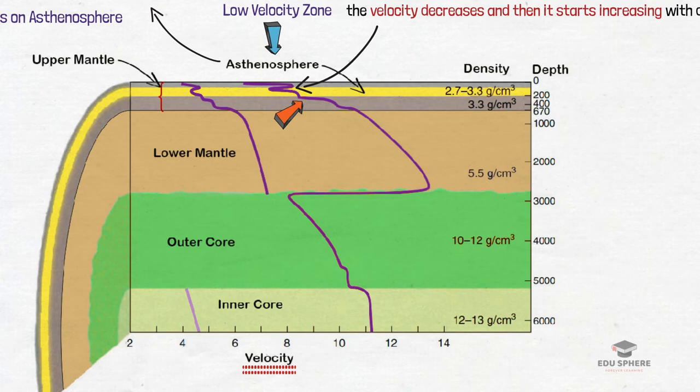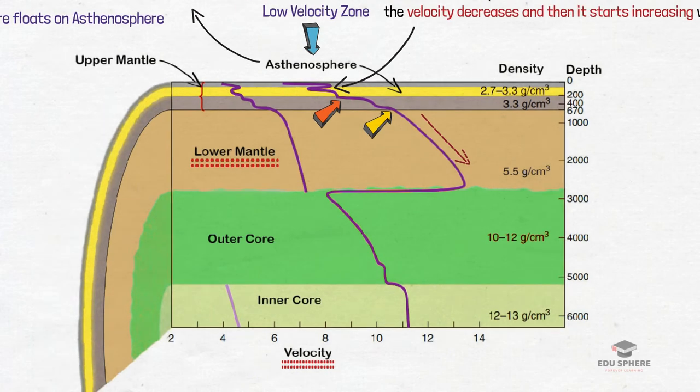Compared to the asthenosphere, the lower mantle below the asthenosphere is more rigid and less plastic. At the top portion of the lower mantle region, there is an abrupt increase in velocity of the seismic waves which indicates the sudden change in the properties of the rocks on entering the lower mantle. We can also observe here that through the depth range of 700 to 2900 kilometers, there is a gradual increase in the velocities of the seismic waves.